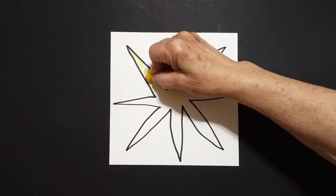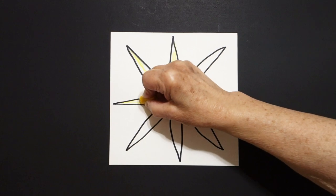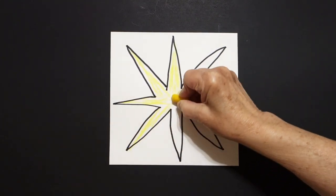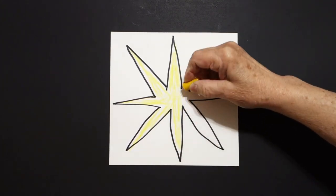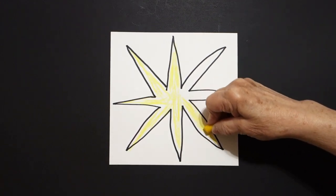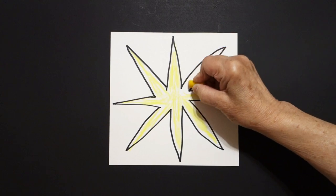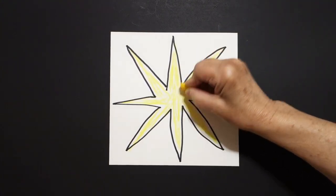But this is a great shape to learn how to draw because you can make them big, you can make them little, you can make them as a background for another bigger picture, and you can color them any color you want. Like I said, I'm doing yellow, but you could color this in any color you want.